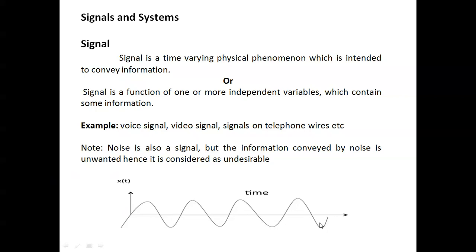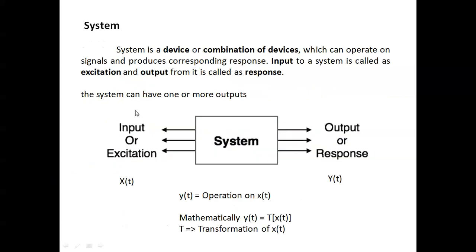A system is a device or combination of devices. It has an input, also called excitation, and an output, also called a response. The input to a system is called the excitation and the output is called the response. Mathematically, y(t) is equal to the transformation of x(t), where T is the transformation operator applied to the input x(t).